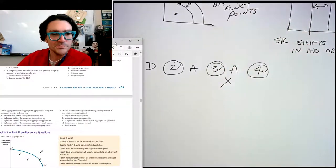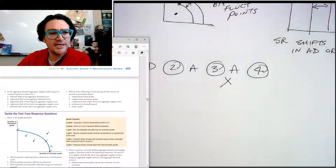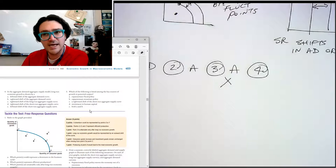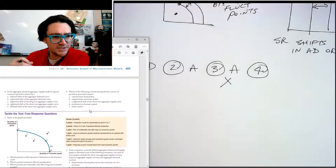Number four, let's move a little bit. In the aggregate demand aggregate supply model, long run economic growth is shown by a rightward shift of the LRAS. So where do we see that? Rightward shift of the LRAS is C.